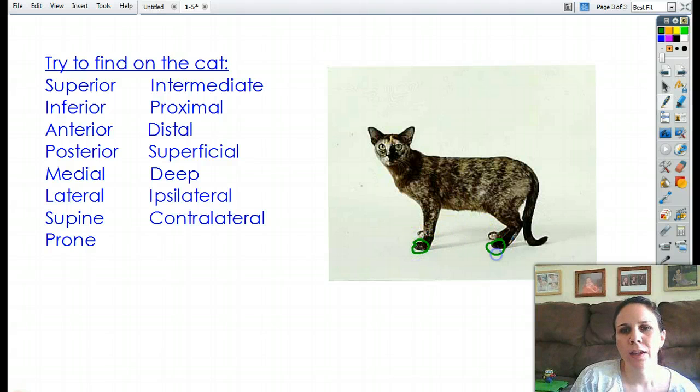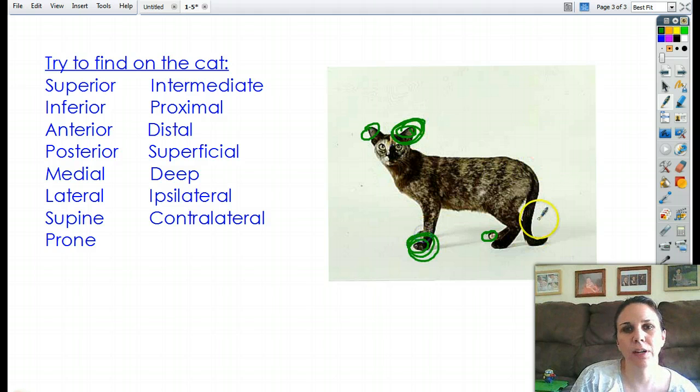This foot and this foot are ipsilateral. And this foot and this foot are contralateral. Or the ears are contralateral because they're on opposite sides. This ear and this foot are ipsilateral because they're on the same side.